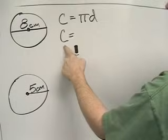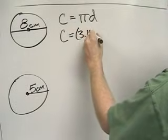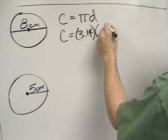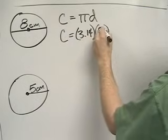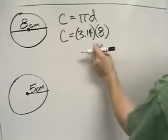I don't know the value for C, so I'm going to copy down C. I know the value of pi, it's 3.14. And I also know the value of D in this problem. In this problem, D is equal to 8. So now the circumference is equal to 3.14 times 8.